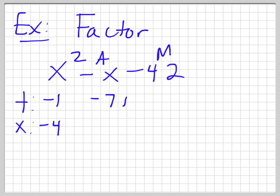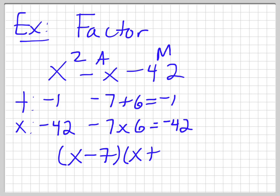Well, negative 7 plus 6 is negative 1. Negative 7 times 6 is negative 42. So there it is. So I'll write it in factored form, x minus 7, x plus 6. So it's a pretty quick video guys, I hope this helps, but factoring trinomials is very important.